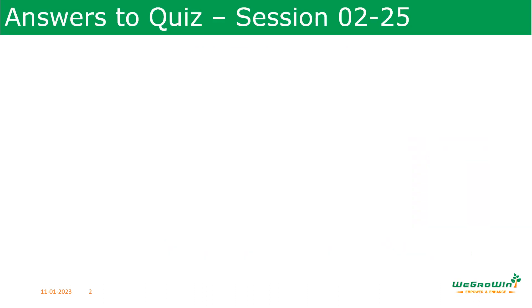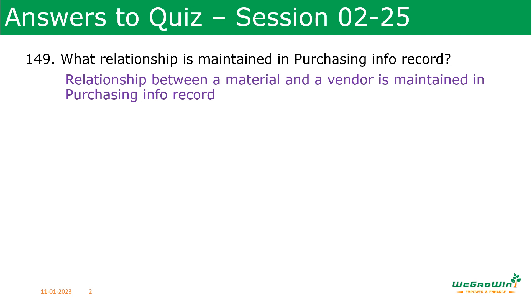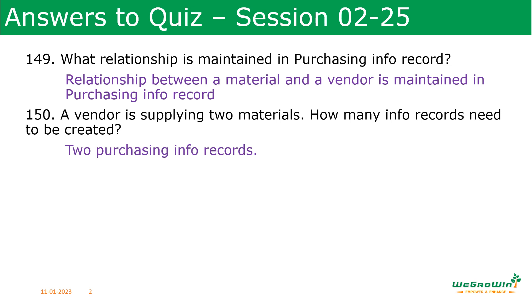Before going into the session, let us review answers for the previous session's quiz. What relationship is maintained in a purchasing info record? The relationship between a material and a vendor is maintained in the purchasing info record. If a vendor is supplying two materials, how many info records need to be created? Because there are two materials, we need to create one info record for each, so two purchasing info records.